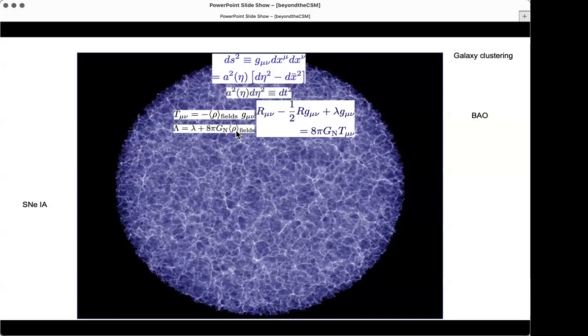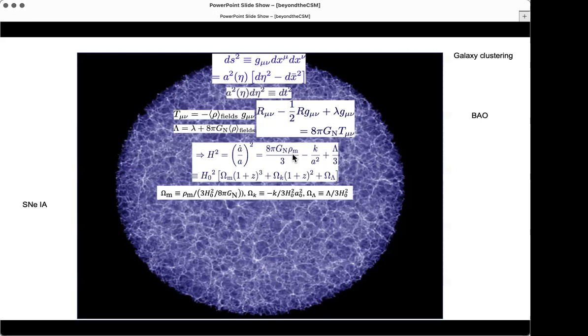This is because the vacuum of quantum field theory must look the same to all inertial observers. You get a contribution that looks like a cosmological constant. Normally, a cosmological constant is what you add to the left-hand side of this equation because the underlying symmetry, the general coordinate invariance, allows you to add any term proportional to the metric to the left-hand side. This lambda is completely undetermined. Nothing in the theory specifies it. To that, we are adding something from the quantum fluctuations of the fields, which in principle should be specified by the quantum field theory, but in practice it is not calculable.